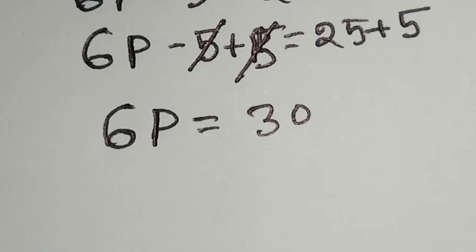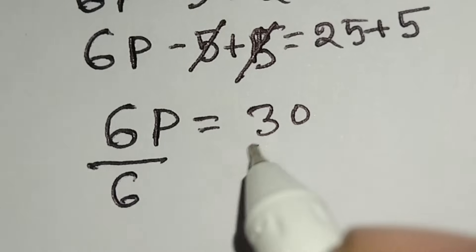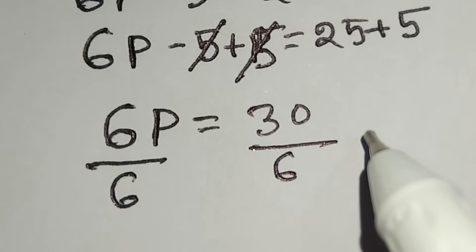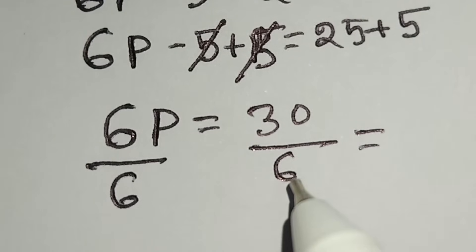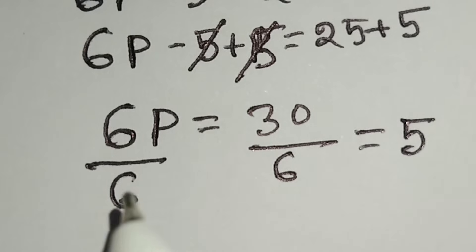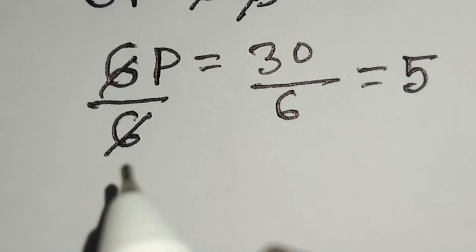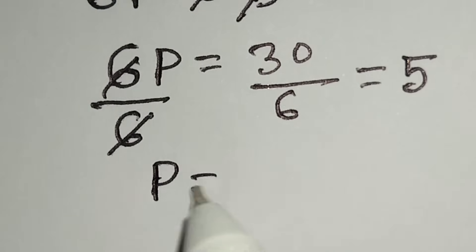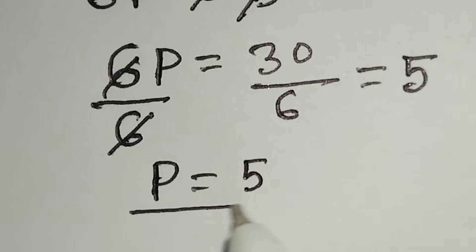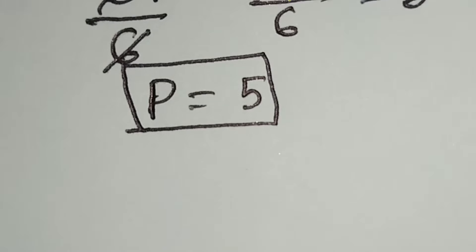Now we will divide both sides by 6, so we can write 6p over 6 equals 30 over 6. Here 30 over 6 is equal to 5, and the 6s cancel, giving us p is equal to 5. This is our result. Let's verify.